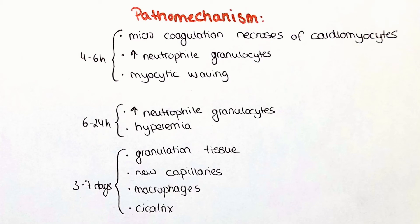I also want to briefly talk about the pathomechanism and the changes that happen within the first seven days after the infarction occurs. In the first four to six hours, we can observe microcoagulation necrosis of the cardiomyocytes. Also, we can observe an increase in neutrophil granulocytes, which is a reaction of the immune system to the excessively dying cells. Another sign for MI is myocytic waving, which we can see in a histological investigation.